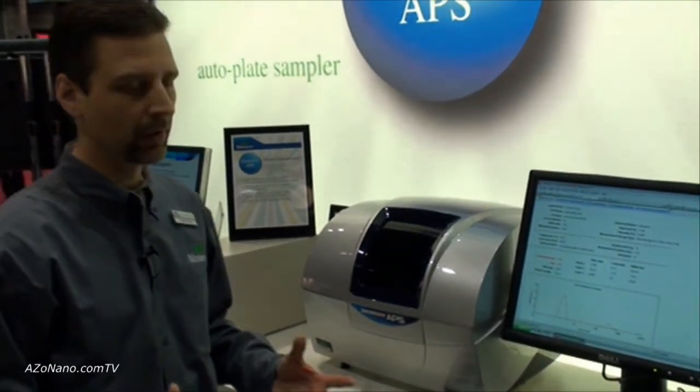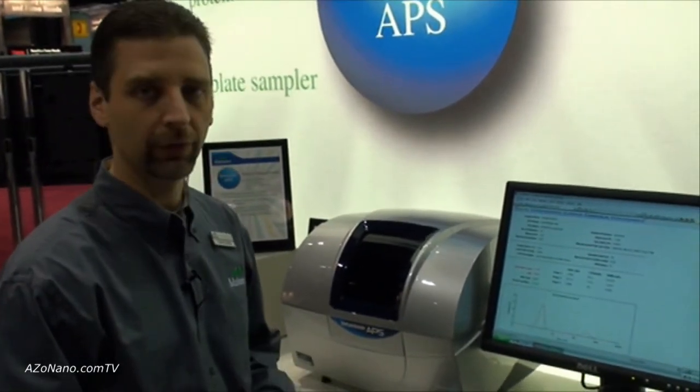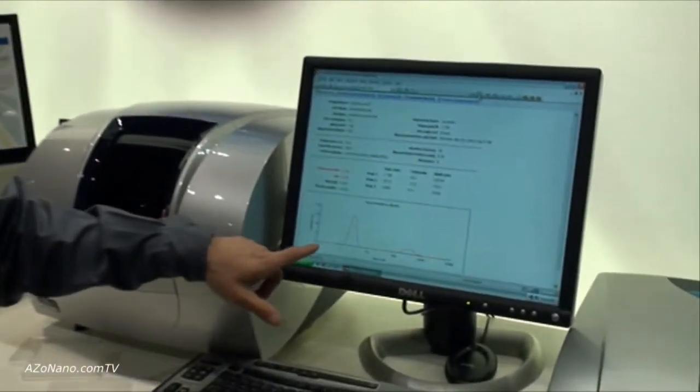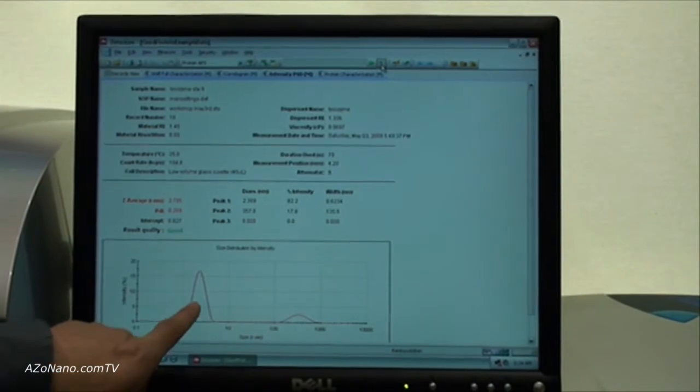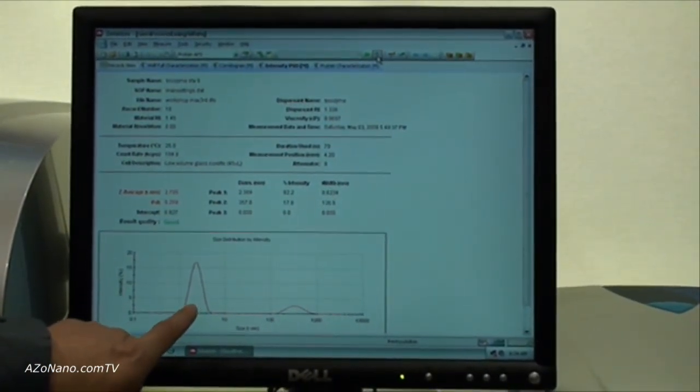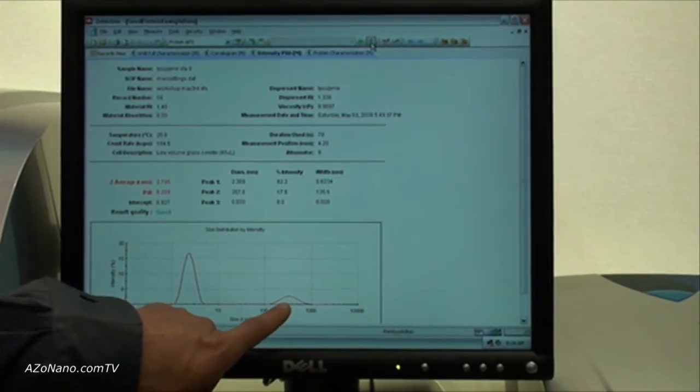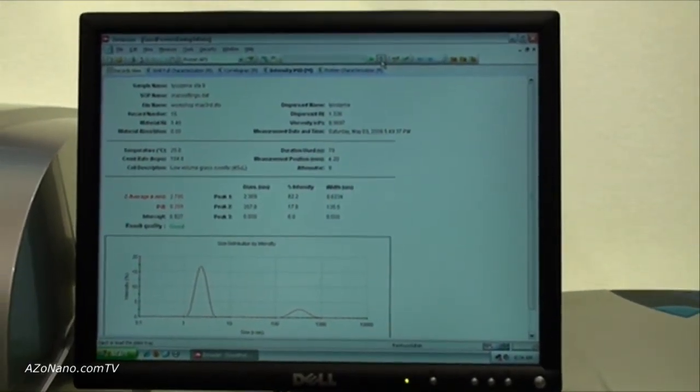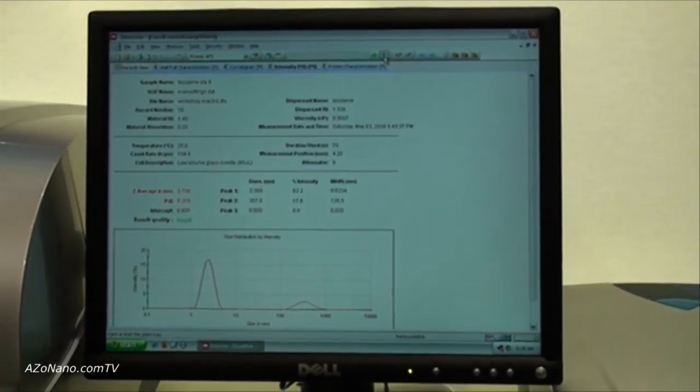It's very simple to use from the operator's perspective—very intuitive, user-friendly software. This is an example of a data result. This happens to be a protein that we measured. We have the size of the main peak of the protein, and we can see there's a small amount of aggregation. We can quantify exactly how much that is.